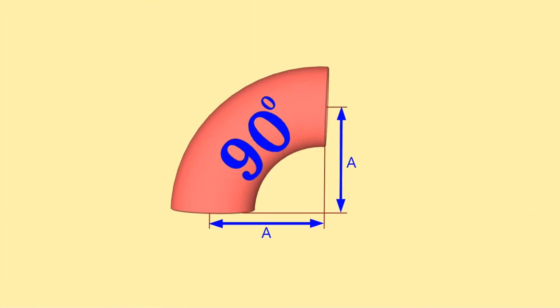When we say pipe elbow length, we mean the distance from the center of the elbow to the end of the elbow. The length of the long radius pipe elbows can be calculated with two formulas. The formula for calculating center to end distance of long radius elbows is as follows.